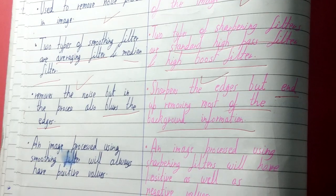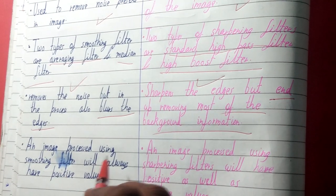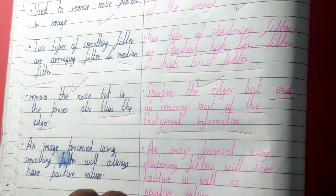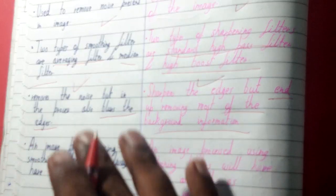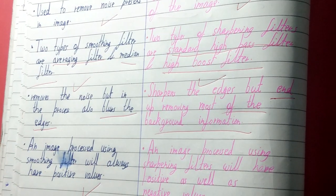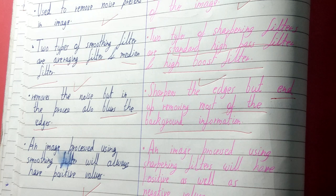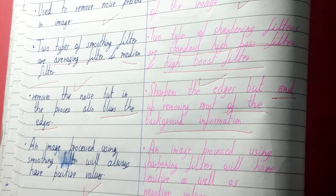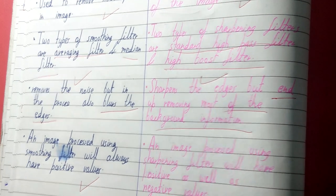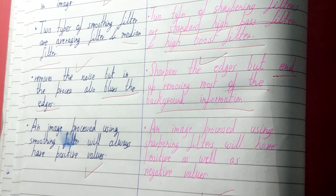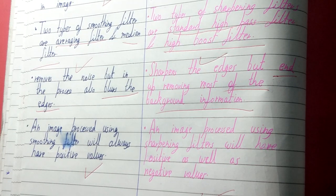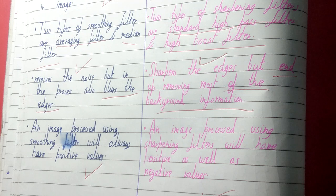An image processed using the smoothing filter will always have positive values. But an image processed using the sharpening filter can have both positive as well as negative values. So this was all about smoothing and sharpening filters.